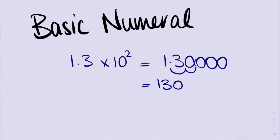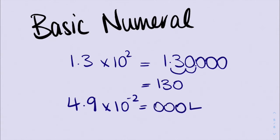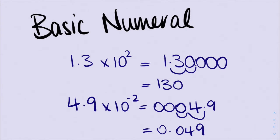Now, if I have 4.9 times 10 to the power of negative 2, I'm going to put a few extra zeros out the front so I can move my decimal place. That negative 2 tells me I'm going forward with my decimal place — so I go forward 1, 2, and that's where I'm going to put my decimal place in. So I've got 0.049, which is 4.9 times 10 to the power of negative 2.